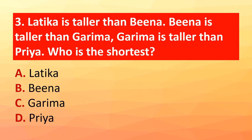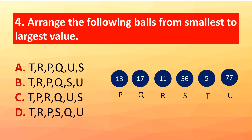Question 3 (continued): Who is the shortest? The correct answer is option D: Priya. Question 4: Arrange the following balls from smallest to largest value — Ball P: 13, Ball Q: 17, Ball R: 11, Ball S: 56, Ball T: 5, Ball U: 77. The correct answer is option B.